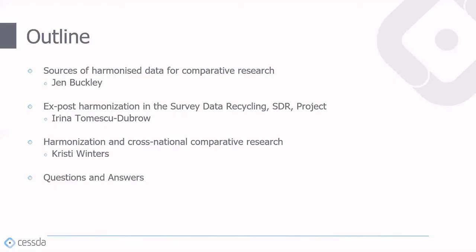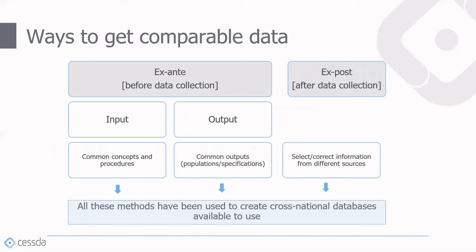How do we get comparable micro data across countries? There are two main options. We can collect new data cross-nationally, where harmonization efforts focus on common concepts, instruments, and procedures, or focus on achieving comparable outputs. There is also the option of ex-post harmonization, where a comparable data set is made by selecting information from different sources. Crucially, we are seeing more and more international databases being made available to researchers through all of these different approaches.